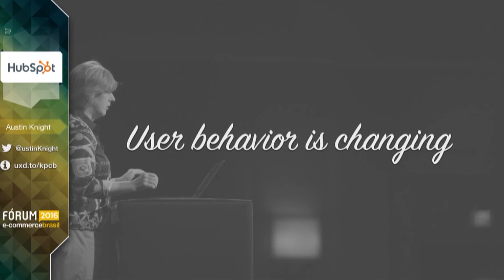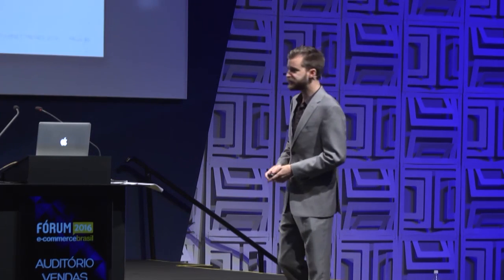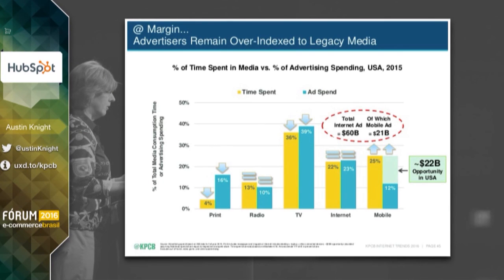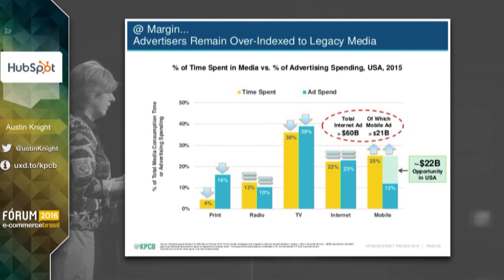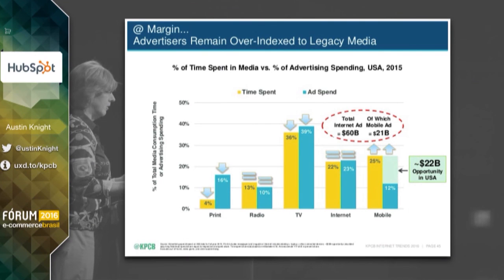It's a gigantic report, so I can't tell you everything that's in it, but it's free and you can find it online. I'm just going to go through some of the highlights most relevant to our discussion about design. The first thing that stood out to me was that the time people spend on certain platforms is actually disproportionate compared to the amount of money we spend advertising on those platforms. People are spending very little time in print, and we're still putting a lot of money into print. Radio is about equal. TV is going down. Internet is about equal. But the biggest opportunity is on mobile — people are spending a ton of time there, but we're using very little money in mobile advertising. She found a $22 billion opportunity in the United States alone.